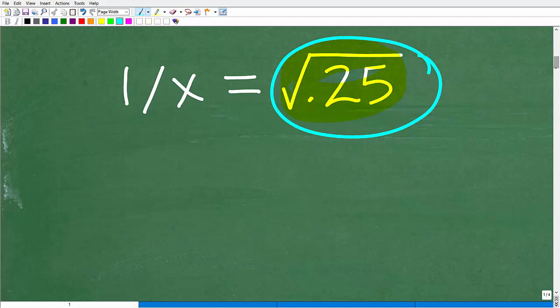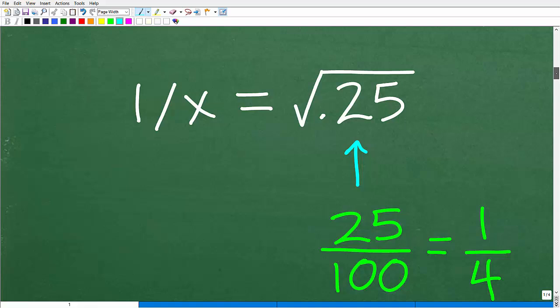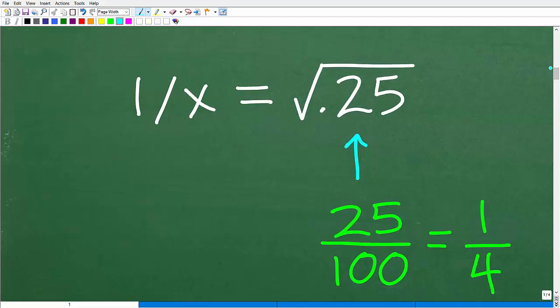Well, we can do this by using our knowledge of place value. So instead of taking the square root of a decimal, it might be easier to think of this as a fraction. So 0.25 is equivalent to what fraction? Well, we have to look at this fraction. Let me put it over here, 0.25. And we want to say this fraction out loud.